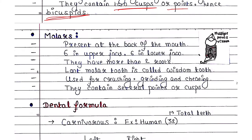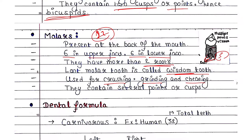Next is molars. They are present at the back of the mouth. Total 12 molars are present in humans — six in the upper jaw and six in the lower jaw. They have more than two roots; here you can see three roots in this picture. The last molar tooth is called the wisdom tooth. Molars are used for crushing, grinding and chewing, and they contain several cusps or points — here three cusps are visible in the crown.